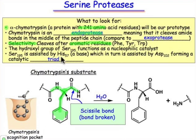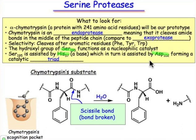In alpha-chymotrypsin, it's the serine 195 group that plays the role of a nucleophilic catalyst. It will form an intermediate ester group. There are a couple of other key residues: histidine 57 functions as a base, and its pKa is modulated by a closely related aspartate group at position 102. Those three groups — serine, histidine, and aspartate — come together in what's known as the catalytic triad.